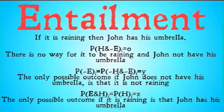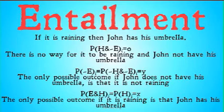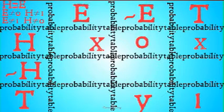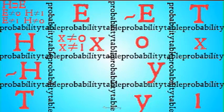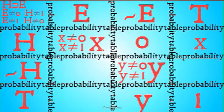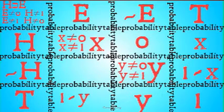The only possible outcome if it is raining is that John has his umbrella — that's modus ponens. So the probability of E and H initial always equals the probability of H initial, or X. With that in mind: X represents H, Y represents not-E, and the probability of H and not-E is 0. We fill in X as the probability of H and E, and Y as not-H and not-E — both remembering these can't equal 0 or 1. The probability of not-H is 1 minus X, and the probability of E is 1 minus Y.